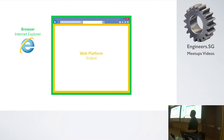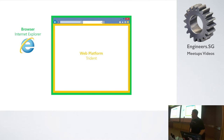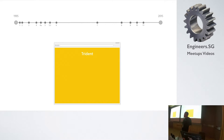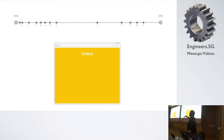Maybe you remember this. The age of Trident is the same as the age of JavaScript — it's 20 years. From Internet Explorer 1 up to Internet Explorer 11, we're using the same engine.